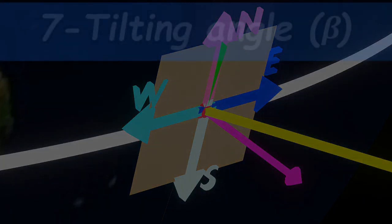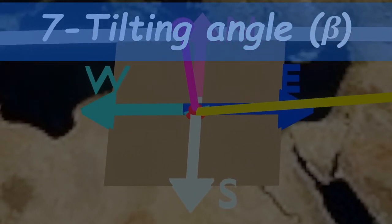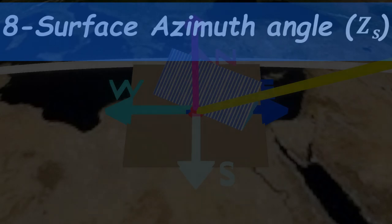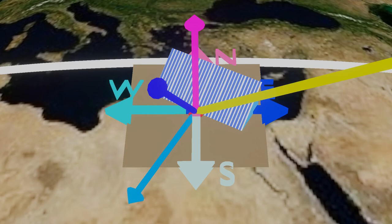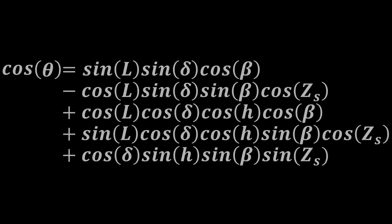Next, the tilting angle: when we put a solar panel inclined to the horizontal ground at some angle, that angle is called the tilting angle. Finally, the surface azimuth angle: if this is the normal to the panel and this is its projection on the horizontal ground, the angle between this line and the south direction is called the surface azimuth angle. And finally, this is the formula to calculate the incidence angle theta in terms of all the previous angles.